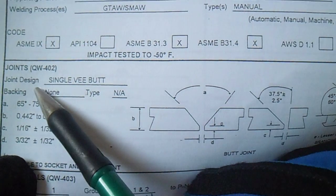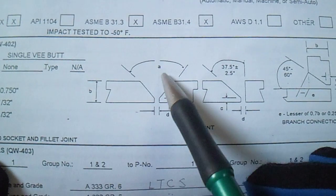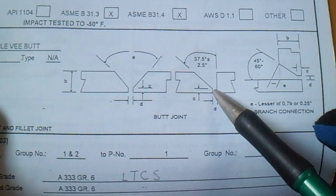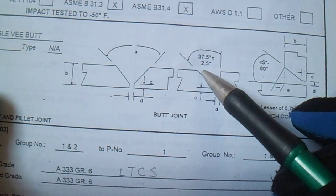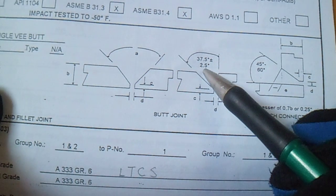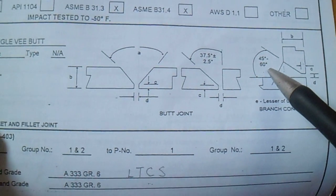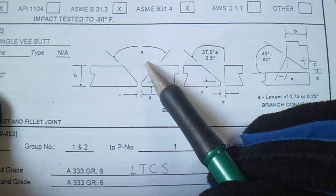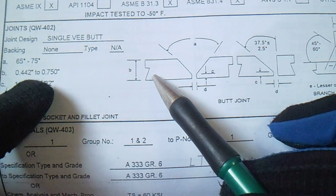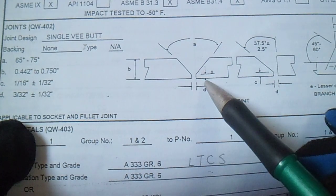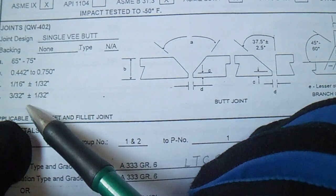For joint design, we have a single V butt joint with backing. The standard groove angle is 37.5 degrees, plus or minus 2.5 degrees. For branch connections, it is 45 to 60 degrees. Dimension A is 65 to 75 degrees, B is 0.750 inch, C is 1/16 inch, and the root gap is 3/32 or 1/32, plus or minus 1/32.